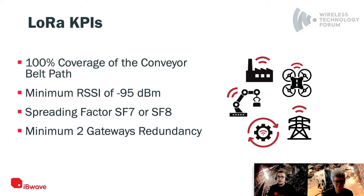LoRa is a chirp spread spectrum-based technology — it spreads the signal instead of transmitting with BPSK modulation or similar. Depending on the spreading factor, you get a different data rate. For uplink, SF7 or SF8 gives you roughly 3 to 5.5 kbps. On the downlink it's approximately 10 to 21 kbps. They had a target data rate for their sensors, which translates into a spreading factor, which in turn defines a target SNR — and this is why they have the RSSI target.